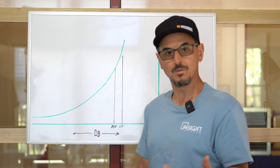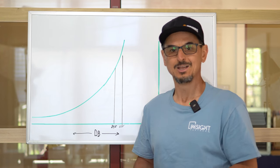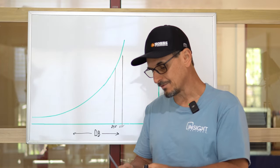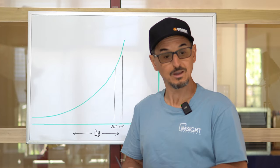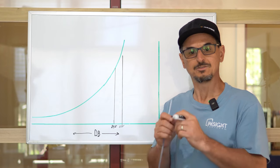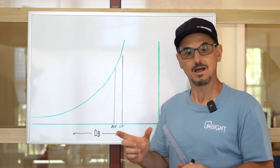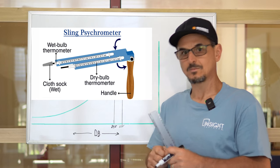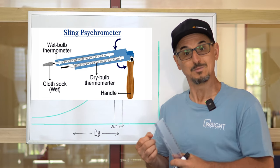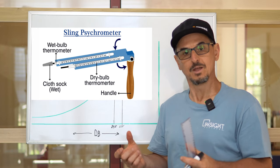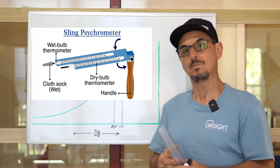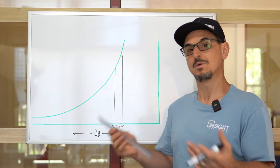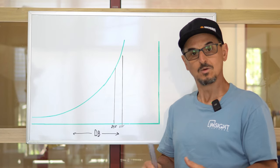Next, let's look at wet bulb. Wet bulb has to do with the moisture in the air. The way it's measured — it used to be measured with a thermometer that had a wet wick on the bulb. If the air is drier than that wick, the water will evaporate off the wick, provide a cooling effect, and decrease the temperature. So the wet bulb temperature is always lower than the dry bulb temperature. The higher the wet bulb, the more moisture in the air; the lower the wet bulb, the lower the moisture content.